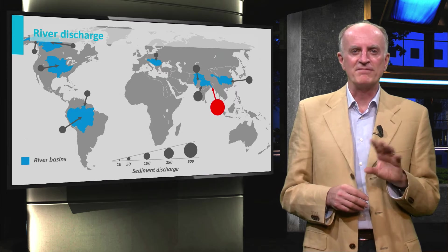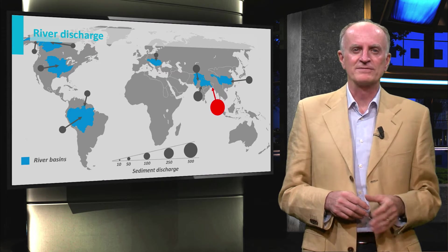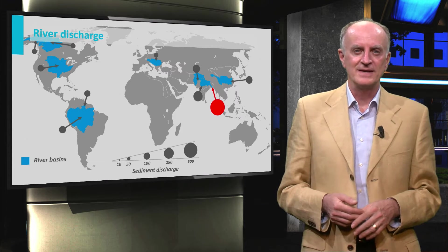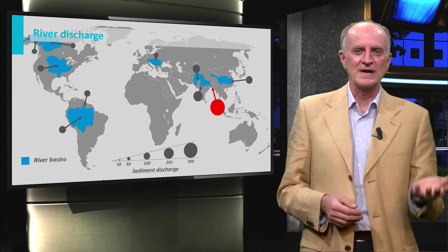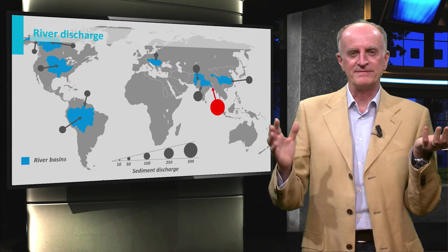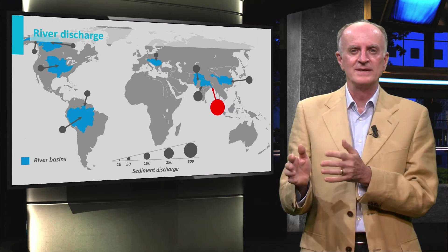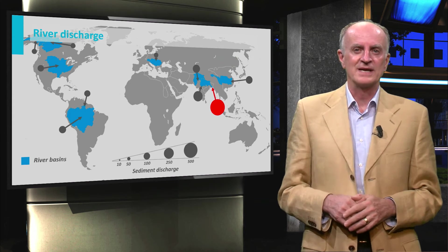You can see that by far the largest amount of sediments is transported by the rivers draining the Himalayas. These mountains experience strong uplift, are affected by very strong precipitations and are relatively close to the sea, decreasing the amount of sediment abandoned in the continent.